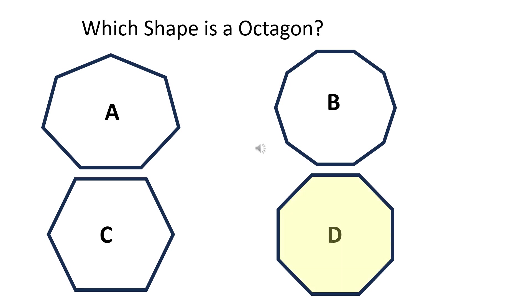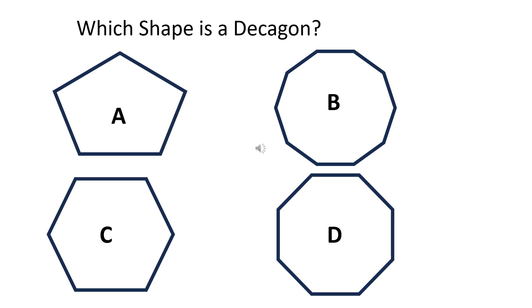The right answer is D. Which shape is a hexagon? The right answer is C.